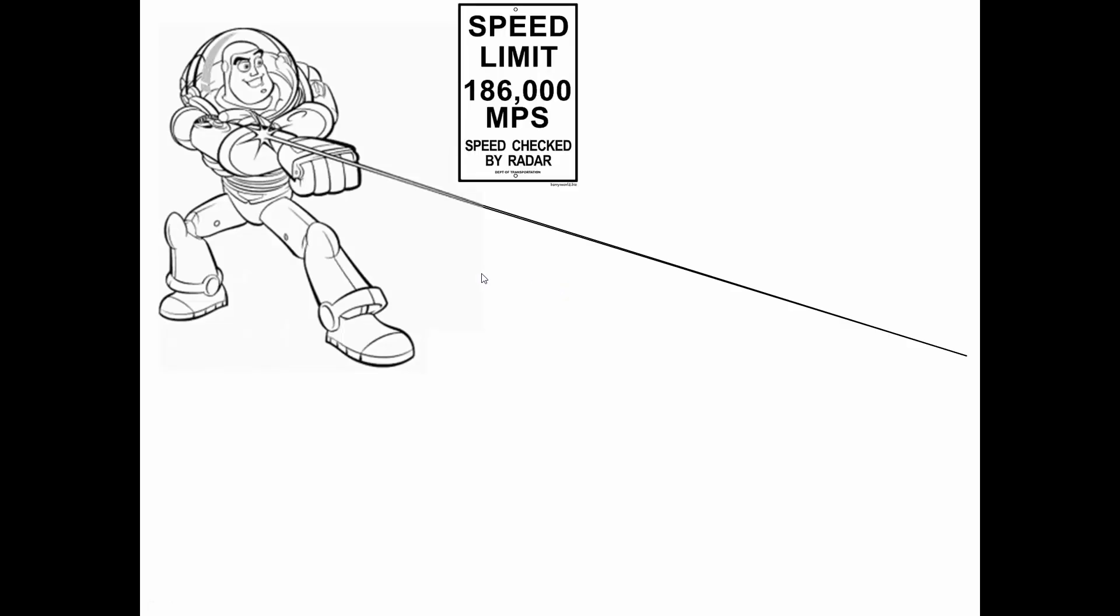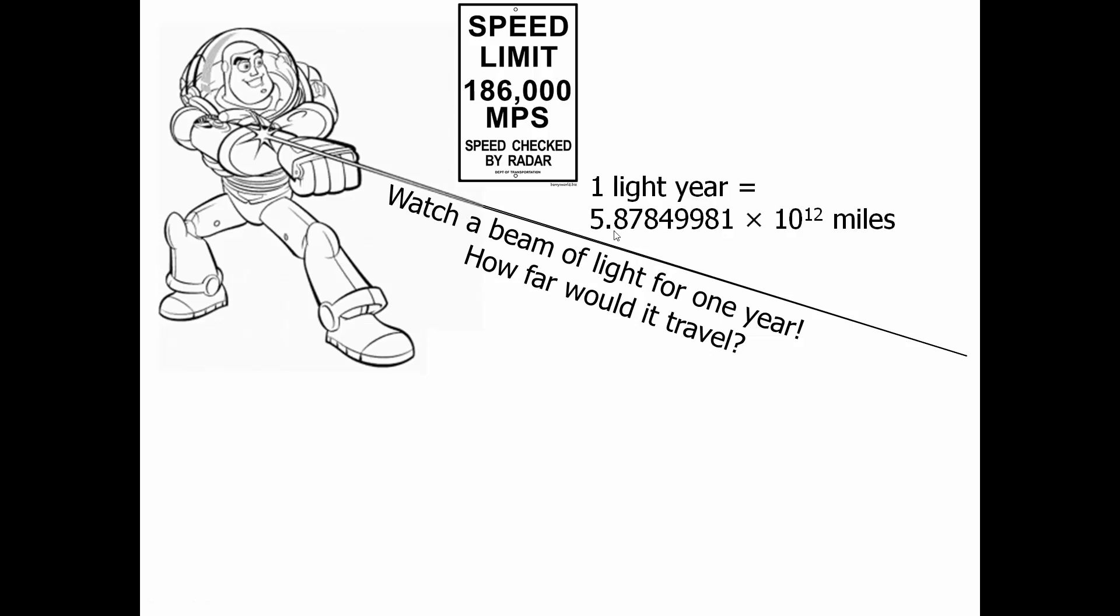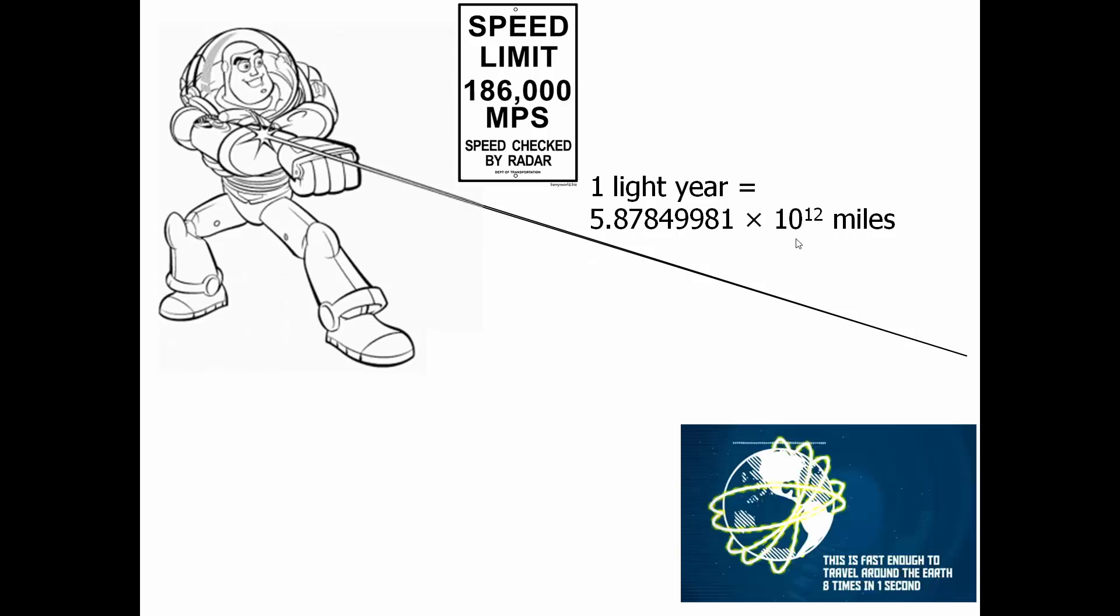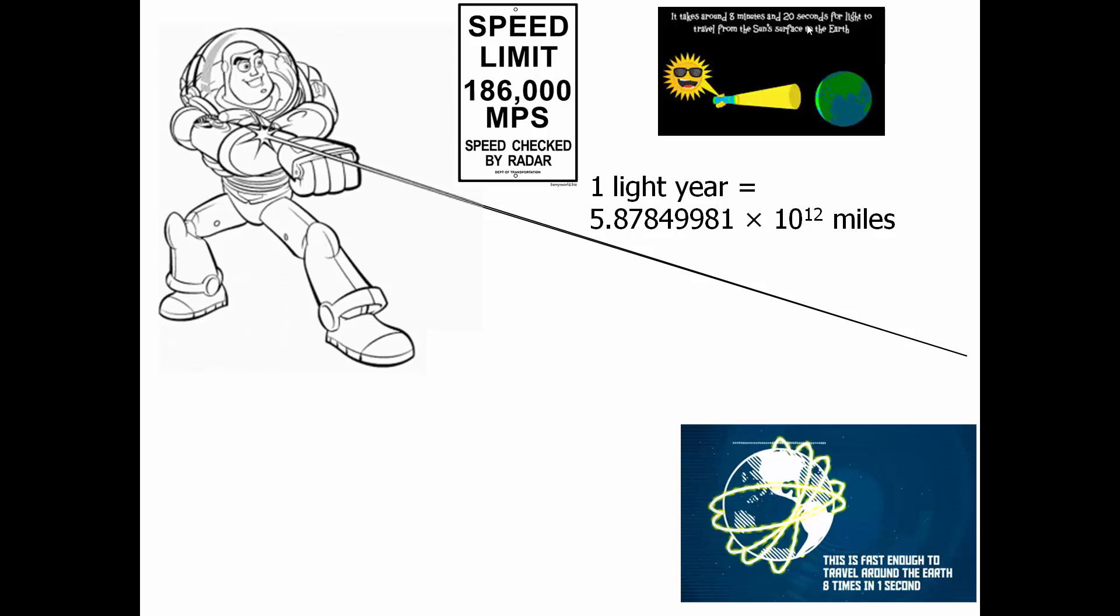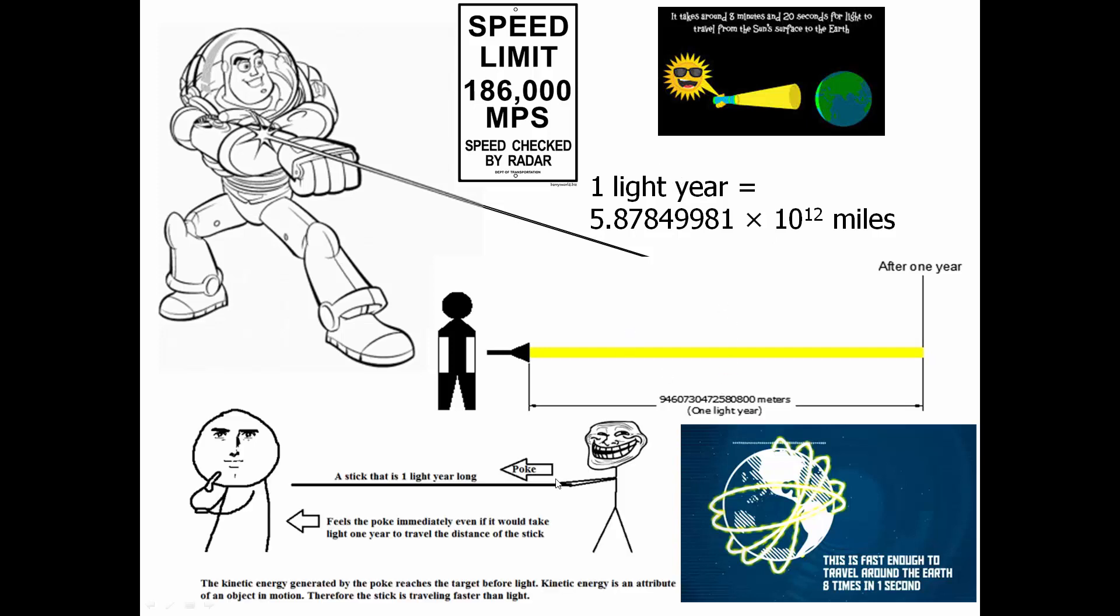Buzz Lightyear talking about light year - there's a speed limit of 186,000 miles per second, checked by radar. If you watched a beam of light for one year, how far would it travel? About 6 trillion miles. At that speed we can make it around the Earth about 8 times in 1 second. At that speed we can go from the sun to the Earth in about 8 minutes and 20 seconds. A fun fact: if you had a stick one light year long and poked it, the person at the other end would feel it immediately, even though the light of you doing the poke would take one year to get there.